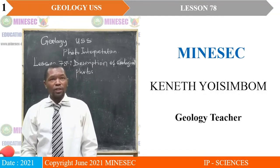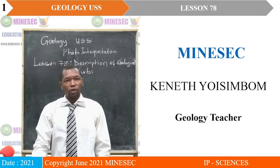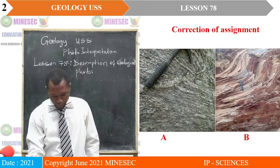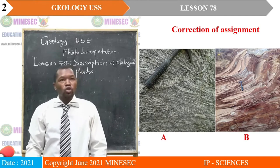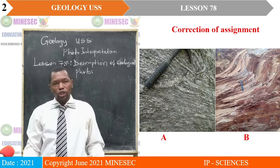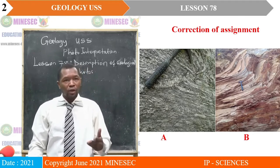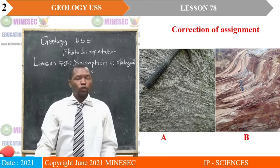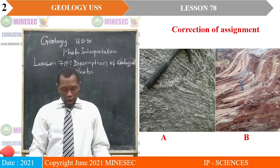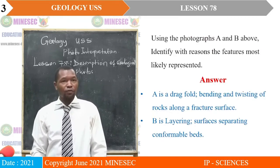Welcome to lesson 78 of your distance learning session for Geology and Science with Kenneth Yosinbaum. During lesson 77, we had an assignment. We shall now proceed to correct the assignment. We had these two photos — photograph A and B — and we were to observe the photos and answer the following questions.